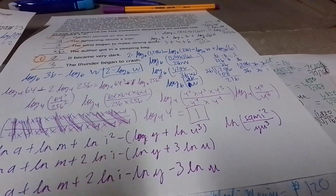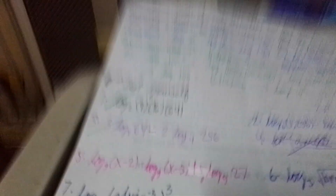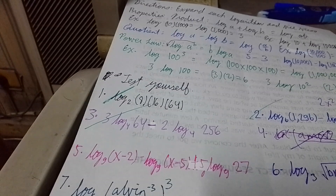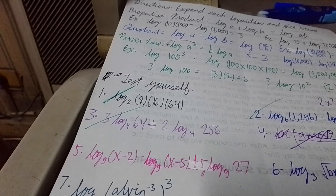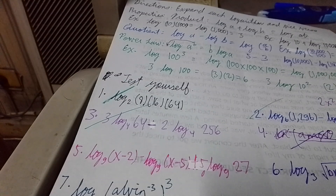Next, let's go to number 5. The problem is: log base 9 of the quantity x minus 2, minus log base 9 of x minus 5, plus 5 times log base 9 of 27. Our goal is to condense it and write it as one single log.